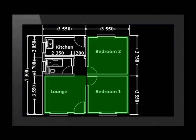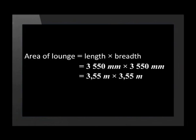Now let's calculate the area that the wooden laminate flooring will cover. There will be wood laminate flooring placed in the lounge and both bedrooms. Do you notice that bedroom 1 is the same size as the lounge? This will make our calculations easier. The area of the lounge is 3,55 times 3,55 metres, which equals 12,6025 metres squared. We don't need to calculate the area of bedroom 1 because we know it is the same size as the lounge.